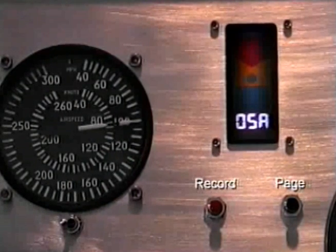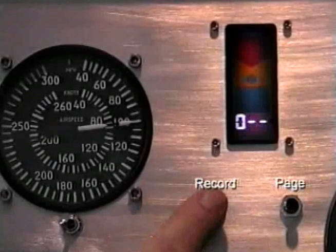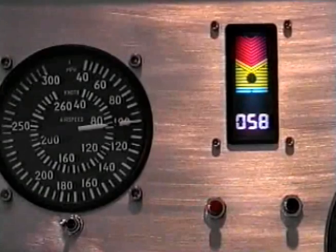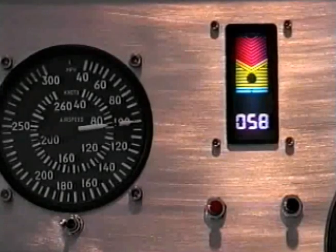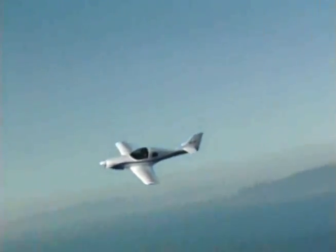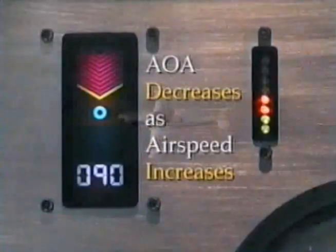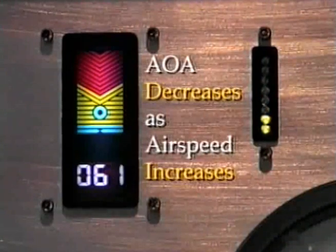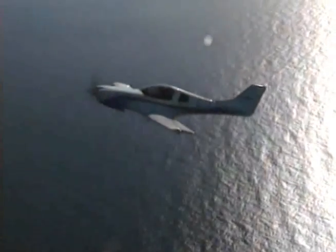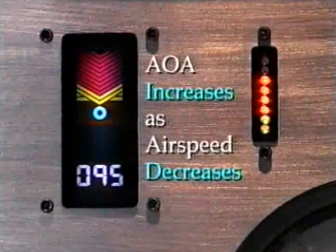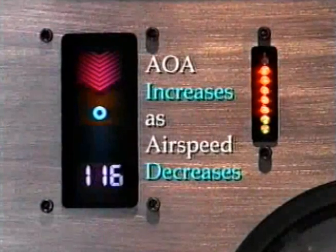This is the page where we will save the calibration data to flash memory. Push and release the record button. Note that the professional has now automatically switched to the flight mode and is using flaps-up data to compute your angle of attack. As you push on the yoke or stick, the angle of attack decreases and the airspeed increases. As you pull on the yoke or stick, the angle of attack increases and the airspeed decreases.